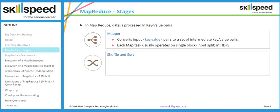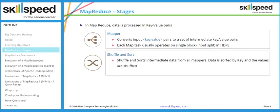The second phase is the shuffle and sort phase. Once all key-value pairs are created on 10 different data nodes, the shuffle and sort phase takes care of assembling all the values of a particular key at one place.